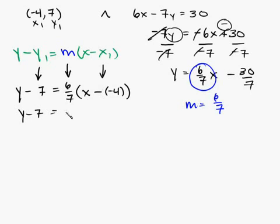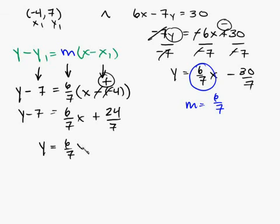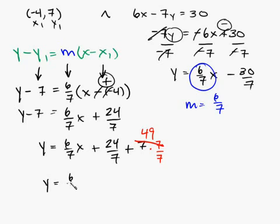So y minus 7 is equal to distribute the 6 7ths. Now, before we do that, look at this. That becomes positive, right? I hope you see that. Now distribute. 6 7ths x plus 6 times 4 is 24 over 7. So, now move the 7 over to the other side by adding it, and you get y is equal to 6 7ths x plus 24 7ths plus 7. Well, we need 7 to be a fraction with a denominator of 7, so we can add it to 24 7ths. So, we're going to multiply 7 times 7 over 7 using our property of identities by multiplying by 1. This becomes a 49, and 24 plus 49 is 73. So, this will be equal to y is equal to 6 7ths x plus 73 7ths.